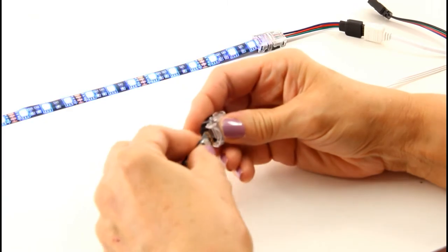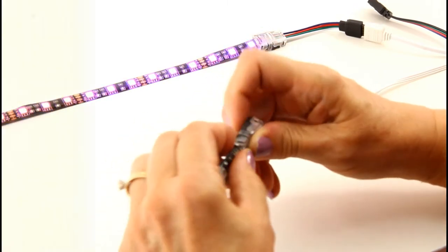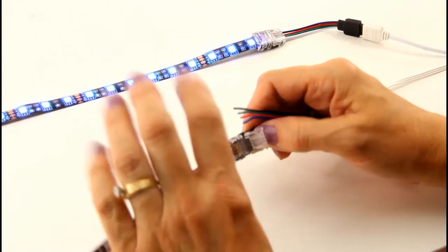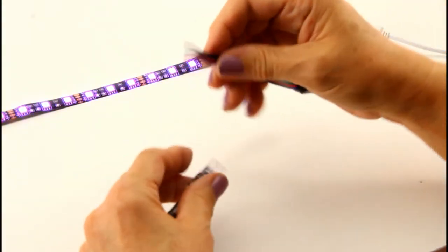We just stick this in. After connecting the RGB LED wire, we take the power connector.